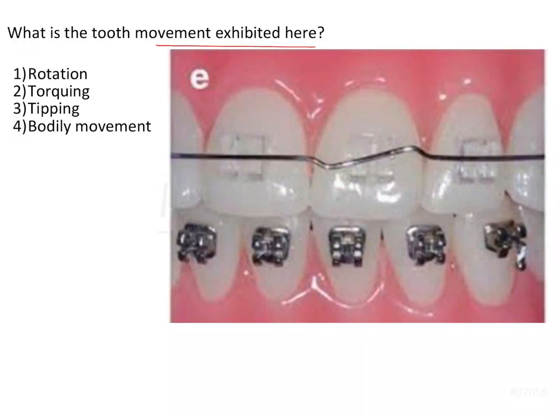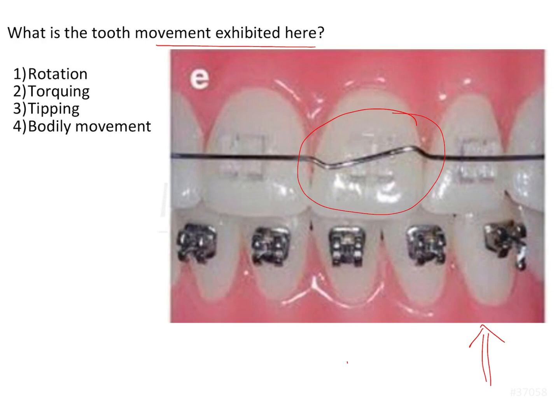Looking at this image, the question is: what is the tooth movement being exhibited by the bend given in the wire? The various types of bends given in the wire were initially used during the standard edgewise technique, which did not have any bracket prescription. So all the tip and torque values seen in the natural dentition had to be incorporated into the wires by giving bends, which were then expressed onto the tooth.